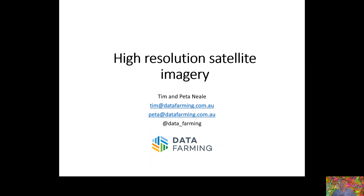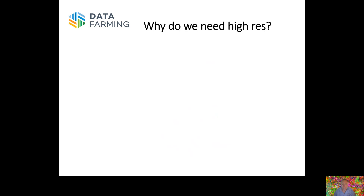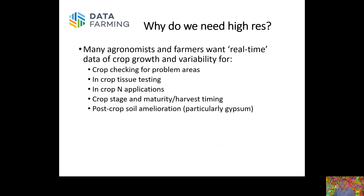Welcome to a short presentation on high resolution satellite imagery and why we've got this option available. A lot of agronomists and farmers are using real-time satellite data for crop growth and to check variability in crop production. Primarily it's about checking for problem areas — quickly targeting those areas with the most issues to identify any problems first.